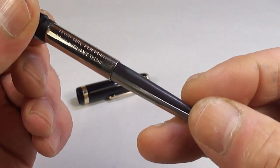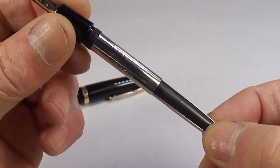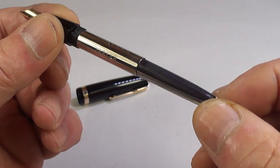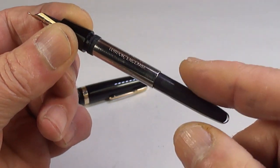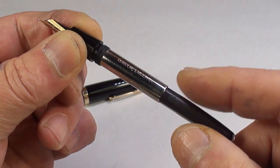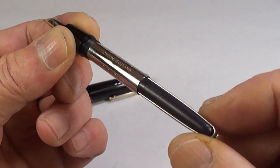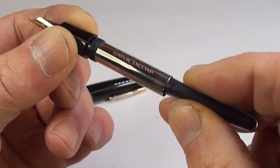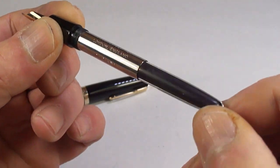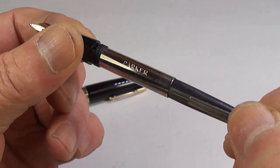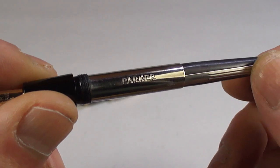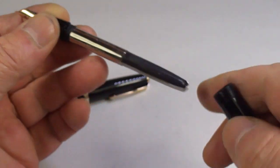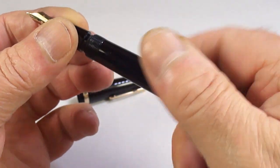Let's take the barrel off. And in this particular case, similar to the Conway Stewart, we've got what Parker termed as the aerometric system. Very similar to the Conway, i.e. we press this bar here numerous times to fill the pen. So let's pop the barrel back.